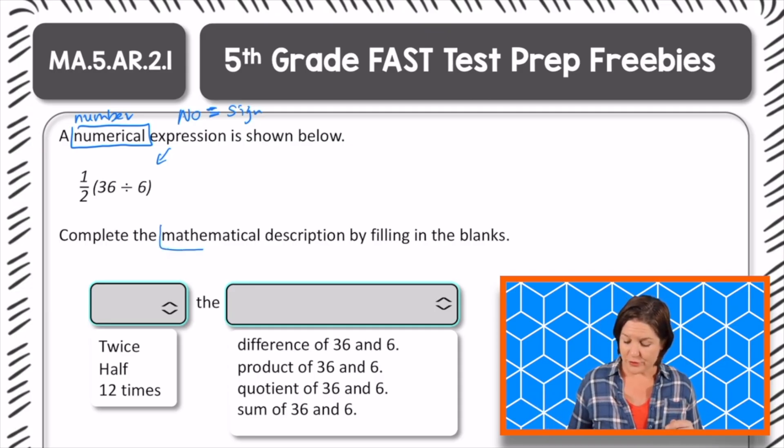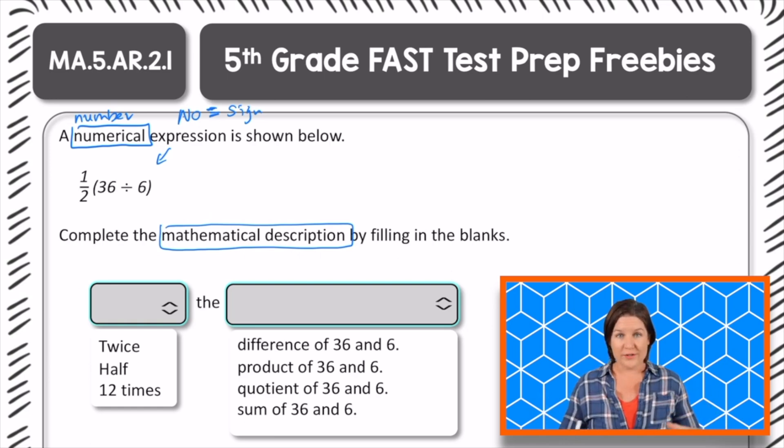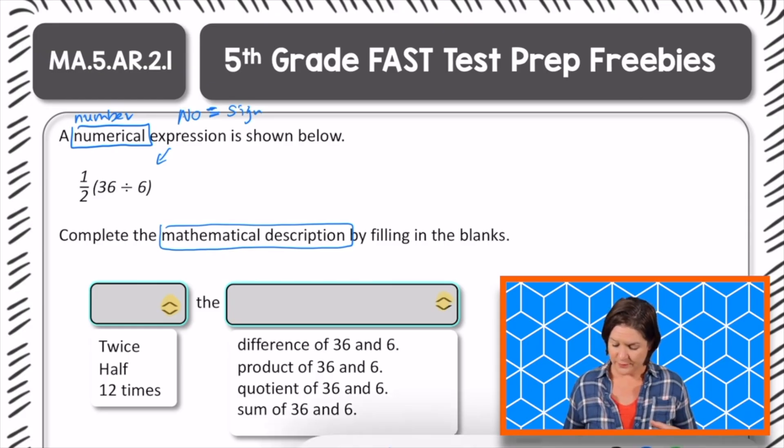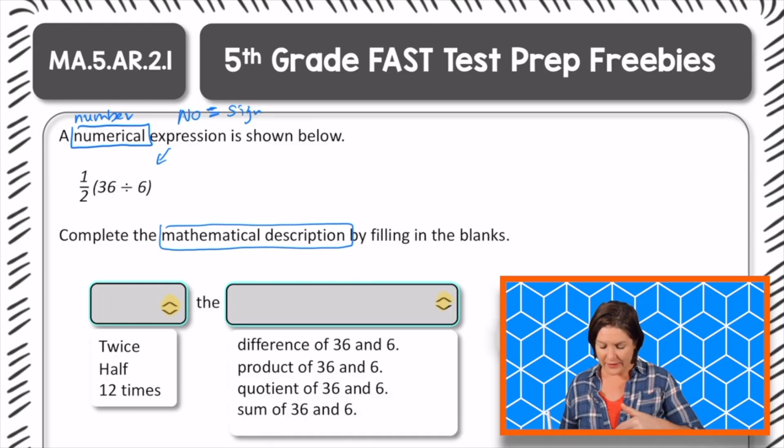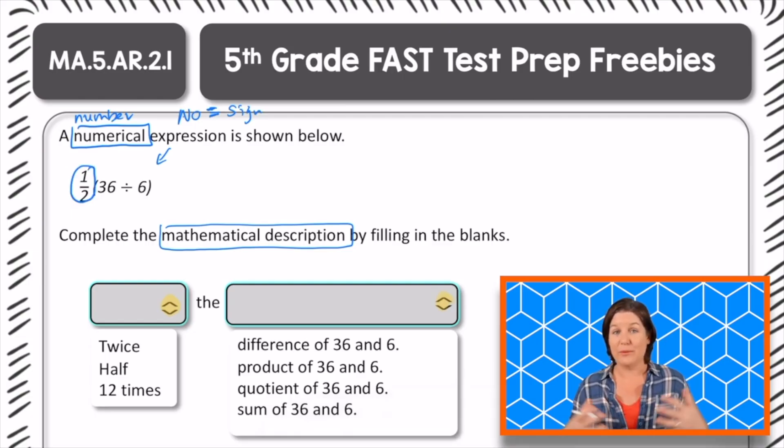Complete the mathematical description. So this is turning that numerical expression into words using a mathematical description by filling in the blanks. So it says blank the blank, and I see little arrows right here, so on a computer-based test, I would click these two arrows, and that would drop down the answer choices, and I would select the answer choice that makes sense. So for this one, would it be twice the blank, half the blank, or 12 times the blank?